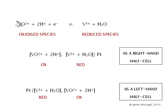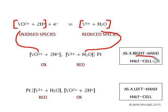And the last example, here are oxidized species, there are reduced species. So oxidized on the left, reduced on the right if it's the right hand half cell, and the other way round if it's the left hand half cell.